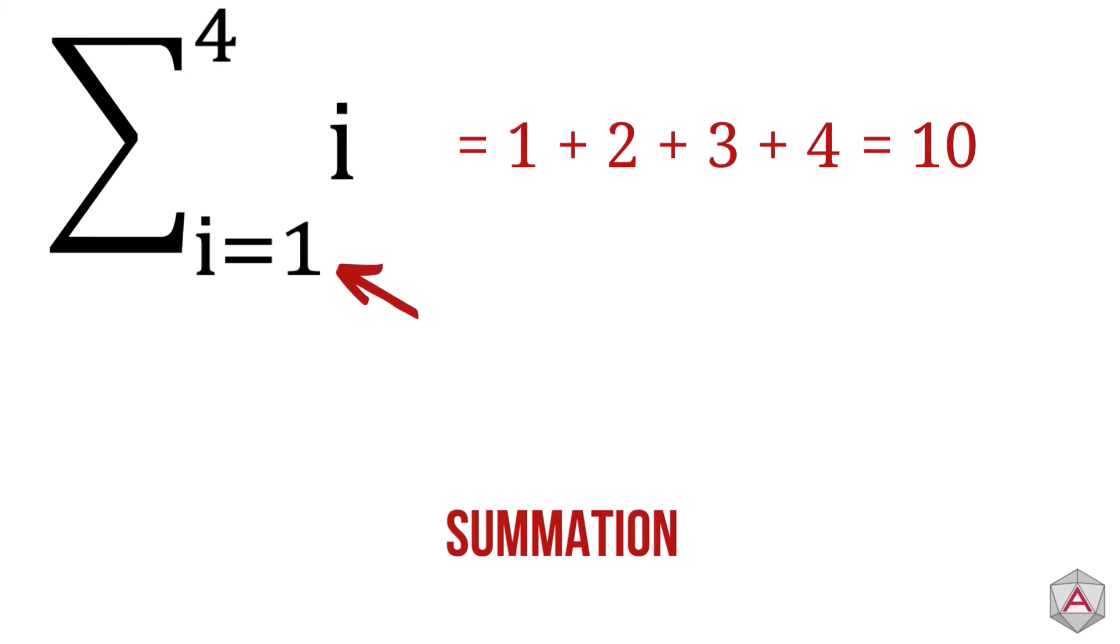This i equals 1 at the bottom tells us that our first value of i is 1. This number at the top tells us that i will increase by 1 until it reaches 4. So for the first time round, i equals 1, round 2 equals 2, round 3 equals 3, and finally round 4 equals 4.